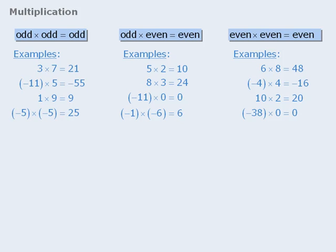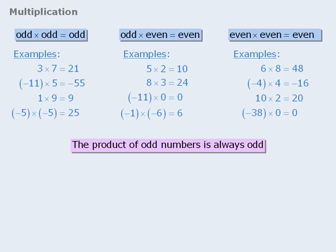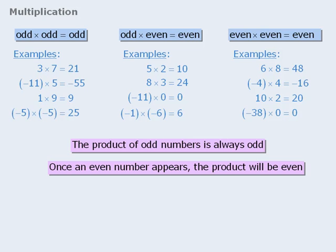These rules can be summarized as follows. First, the product of any number of odd integers will always be odd. So if several odd numbers are multiplied together, the product will be odd. Second, once an even number enters the picture, the product will always be even. So if we multiply several numbers and one or more of them is even, then the product will always be even.